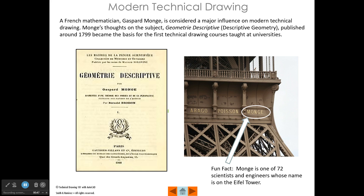Modern technical drawing really came about through the work of a guy named Gaspard Monge. He was a French mathematician who wrote a book called Descriptive Geometry in the late 1700s. The ideas he put forward became the basis for the first technical drawing classes taught at universities. Monge's name is actually one of 72 scientists and engineers whose names are included on the Eiffel Tower — so he's in pretty good company.